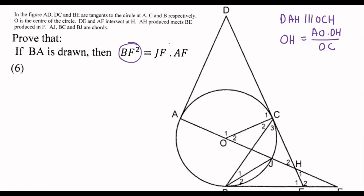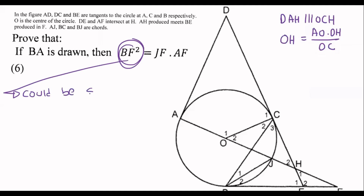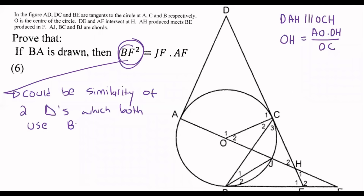Here's another six-mark question: prove that BF squared equals JF times AF. Whenever they have a square, it could be similarity of two triangles which both use BF — that is normally how you get BF squared, by finding two triangles that both use BF.